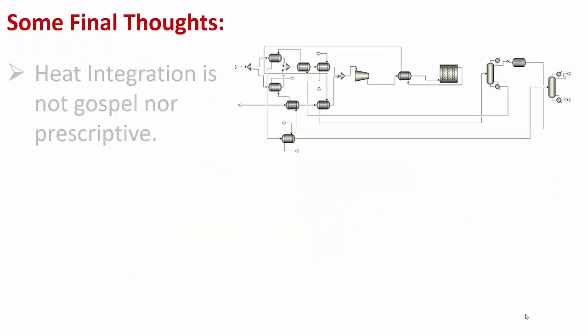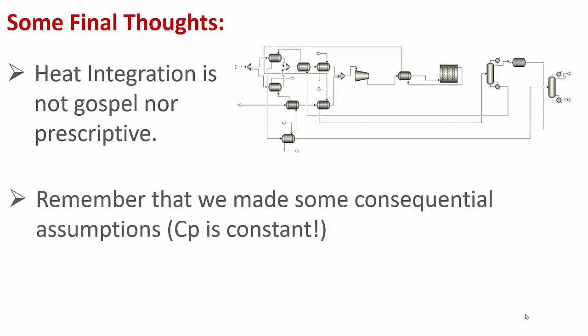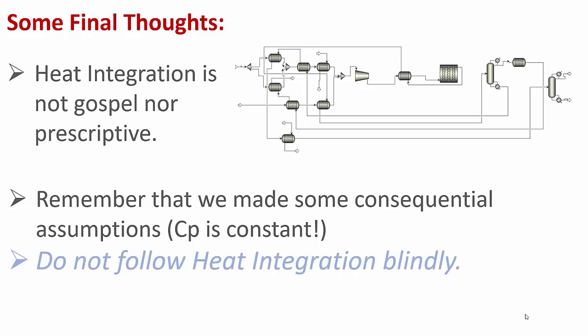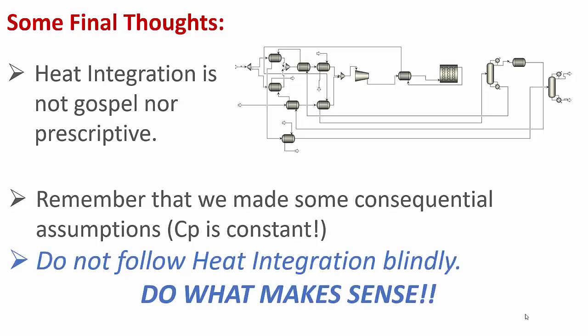Some final thoughts: heat integration is not gospel, nor is it strictly prescriptive. Remember that we made consequential assumptions, such as heat capacity being constant, so the way this works on paper is not necessarily how it will work in Aspen or ChemCAD. Do not follow heat integration blindly — always do what makes sense. If it doesn't make sense to break up a stream into halves, thirds, or sixths, don't do it. Heat integration doesn't know what is cheapest or most profitable. It is just a tool. Thank you so much for sticking with me and for being here for this video lecture series.